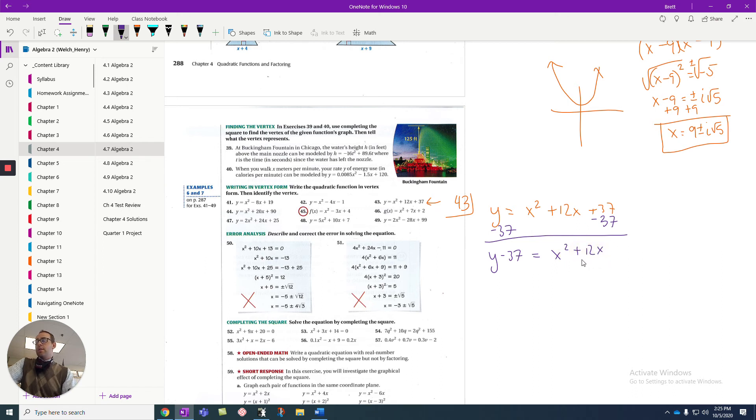Now the next thing I need to do is I need to add in the perfect number. I do that by taking this 12x, saying what's half of 12, which is 6, and squaring that result. That tells me that I need to add a 36 to both sides. So plus 36 and plus 36. When I combine my like terms, I get y minus 1 equals, and here I'm going to factor.